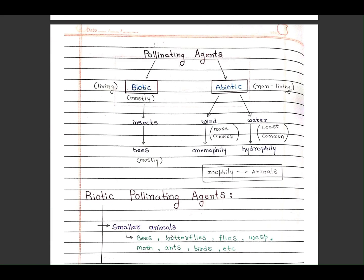Now pollinating agents are of two types: biotic and abiotic. Biotic is living, abiotic is non-living. Biotic agents are insects such as bees, mostly bees. Abiotic are wind and water. Wind is more common, water is least common. Pollinating agents: by wind called anemophily, by water hydrophily, by animals zoophily.